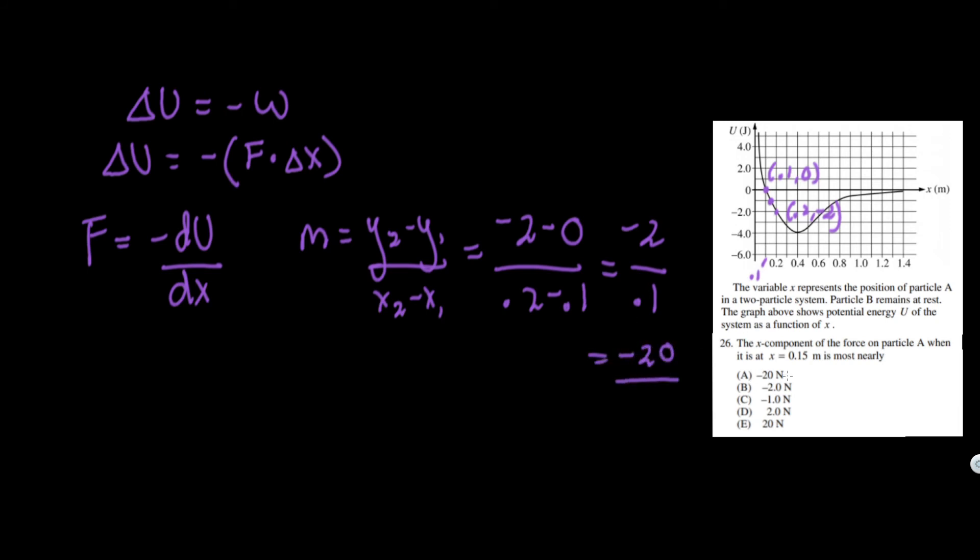Hold on. We're not done yet. Don't go looking at the answers because they'll give you a lot of misleading answers. We need to remember, what are they asking for? The force. But wait, force isn't negative 20 newtons. It's the negative of this slope. So we're just going to have to attach a negative, negative 20, and now it's positive 20 newtons.